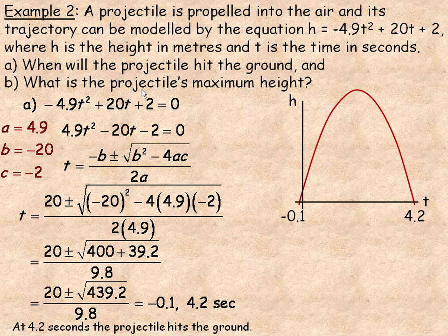In part B, we're asked what's the projectile's maximum height. We do need the negative 0.1 for that. Remember, you average the x-intercepts to find where the axis of symmetry is. We take negative 0.1 and 4.2, add them, and divide by 2. That time works out to 2.05 seconds.